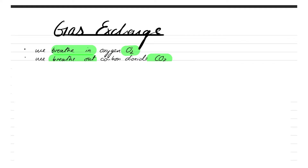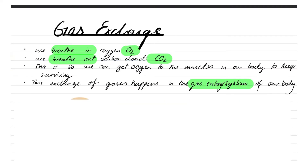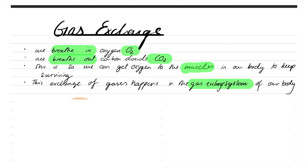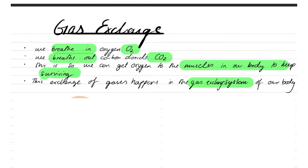We need to breathe in oxygen to help us carry on surviving. The oxygen goes to our lungs, and the lungs transfer it into the bloodstream. The bloodstream carries it to our muscles, so we need oxygen to get it to our muscles so our muscles can work in our body to keep us surviving. This exchange of gases happens in what we call the gas exchange system.